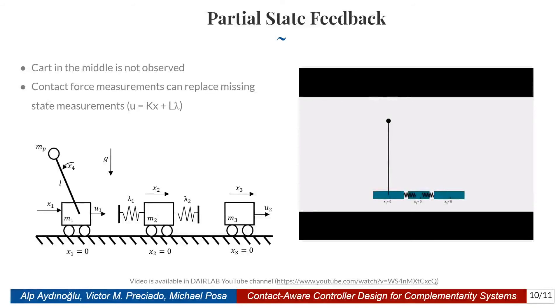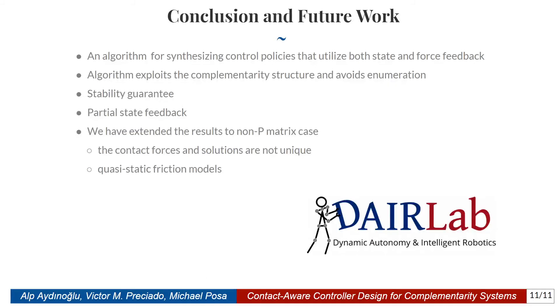In the second example, we consider a model with three carts, and as you can see there's a pole attached to the first cart. Also, we can only manipulate the first and third carts, the outer ones, but we cannot control the cart in the middle. In addition to that, we cannot observe the state or velocity of the cart in the middle, so we cannot observe x2 or x2 dot. But what we can observe is the contact forces lambda 1 and lambda 2. Here in this example, what we demonstrate is that contact force measurements can replace missing state measurements in our control framework. When designing a controller of the form U equals KX plus L lambda, the L term can compensate for the missing K terms.